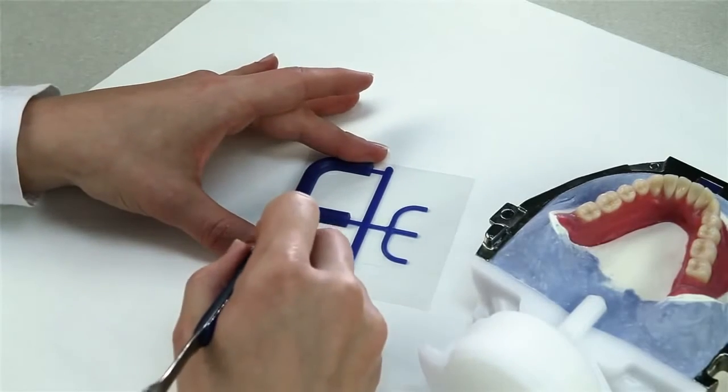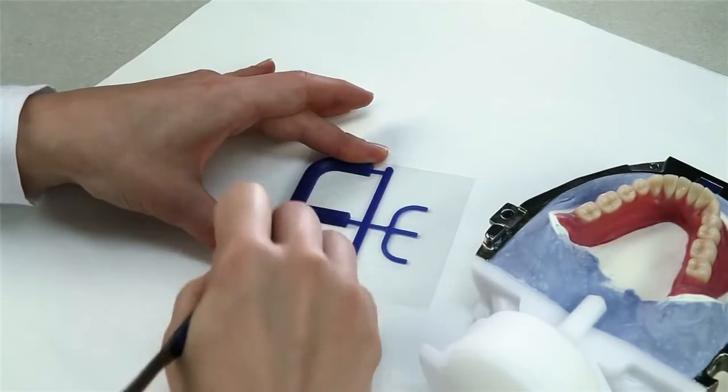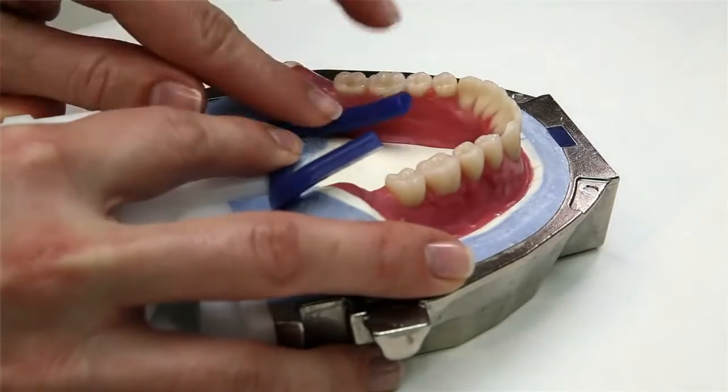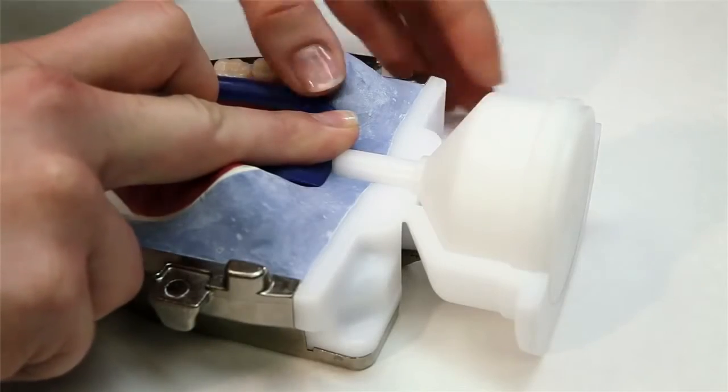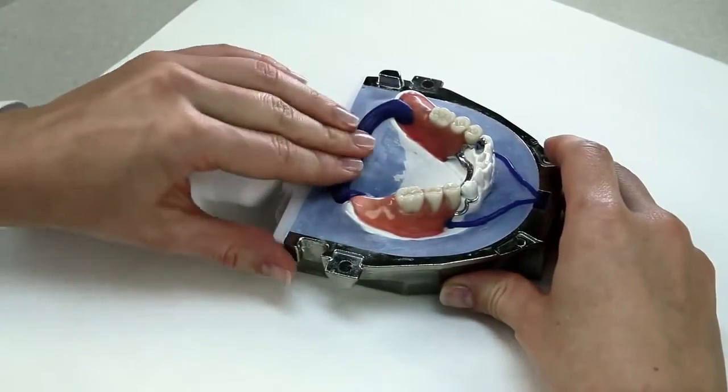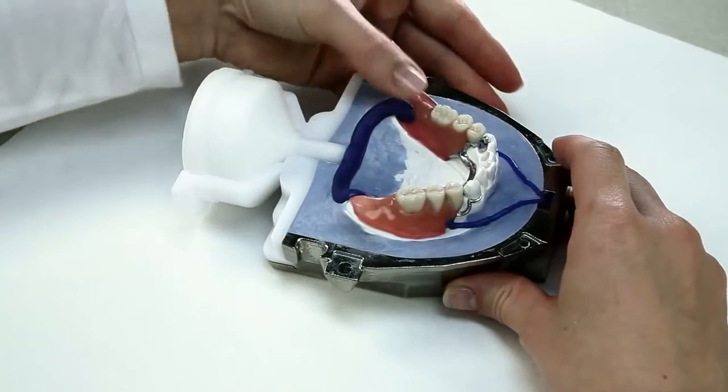For mandibular complete dentures, cut off the center sprue and place the outer sprues in the lingual area of the retromolar triangle. The denture saddles of partial dentures are provided with a sprue each at the dorsal ends.